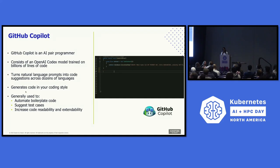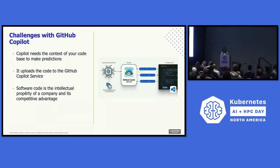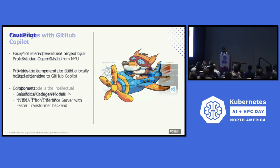We all know GitHub Copilot, our handy AI pair programmer, which generates code based on prompt. But GitHub Copilot uploads our code base — which is the IP of a company — as context to the GitHub Copilot service, which it needs for generating recommendations.